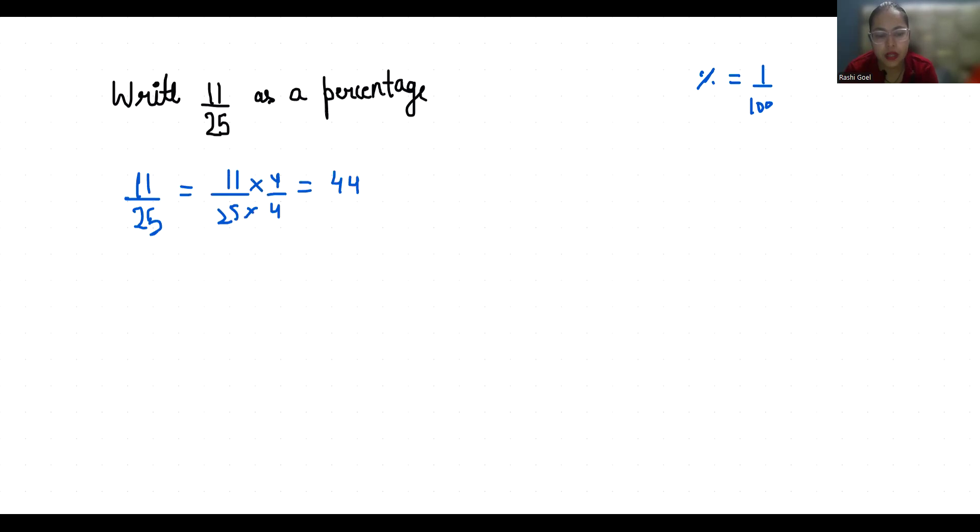Now we can replace this 1 by 100 with the percent sign. So it becomes 44%. So 11 by 25 equals 44%. I hope it's clear and you find it useful.